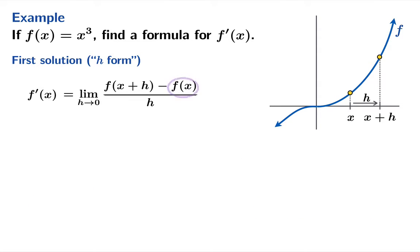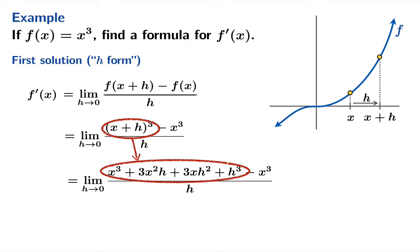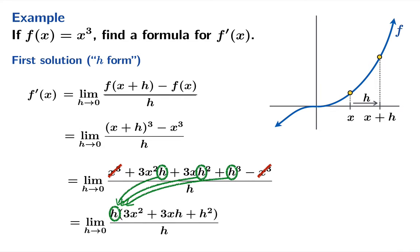In this case our function is the cubing function so we can replace these expressions respectively with x plus h cubed and x cubed. Now we can expand x plus h cubed. Hopefully you know the pattern from the binomial theorem to make that a very quick calculation. Nice simplification here x cubes cancel and we'll notice there's a common h in the numerator which we can factor out. Now the magical moment because now the h's cancel and that troublesome h in the denominator is going to go away. Now we're looking at the limiting value of this expression.